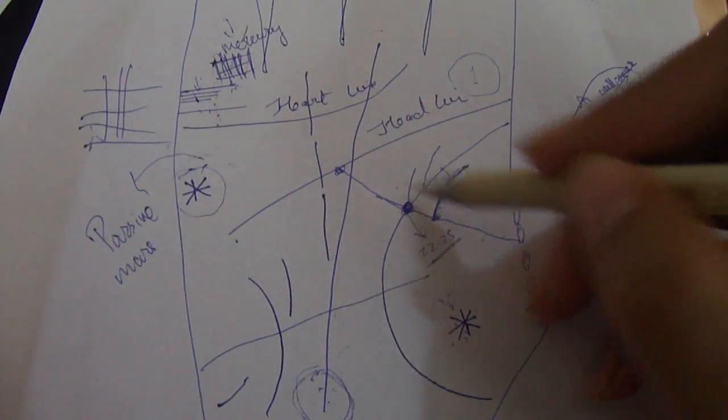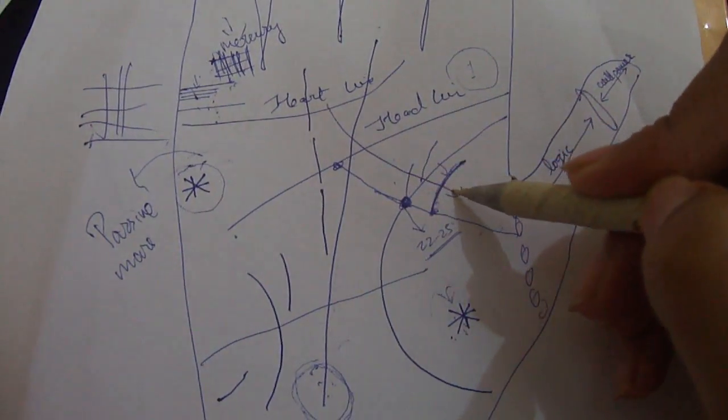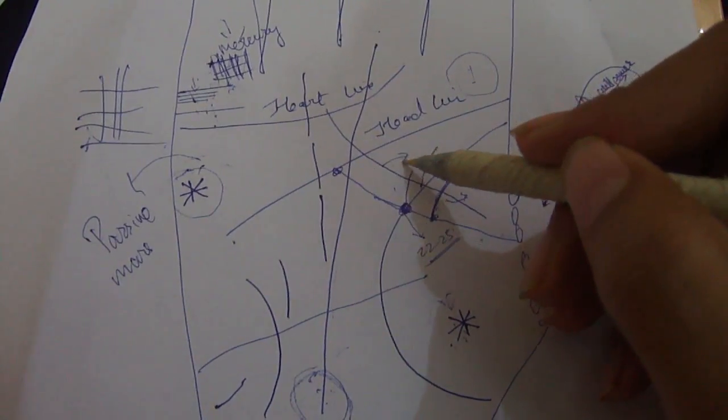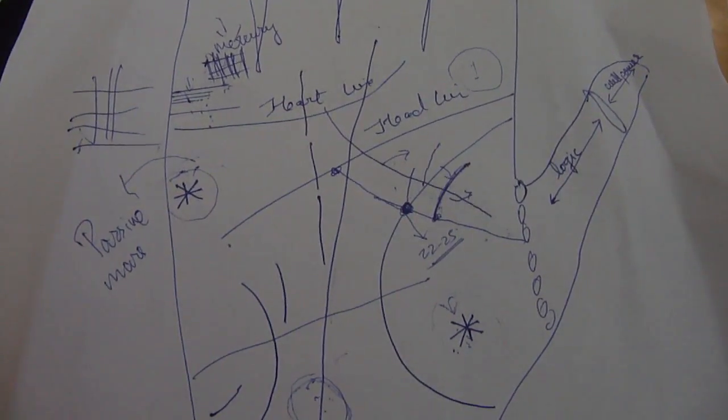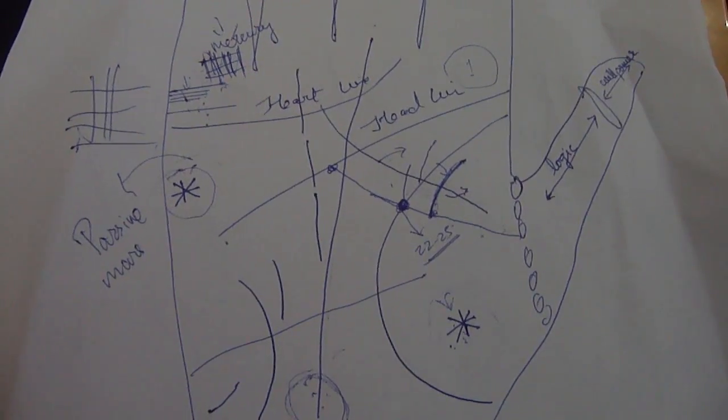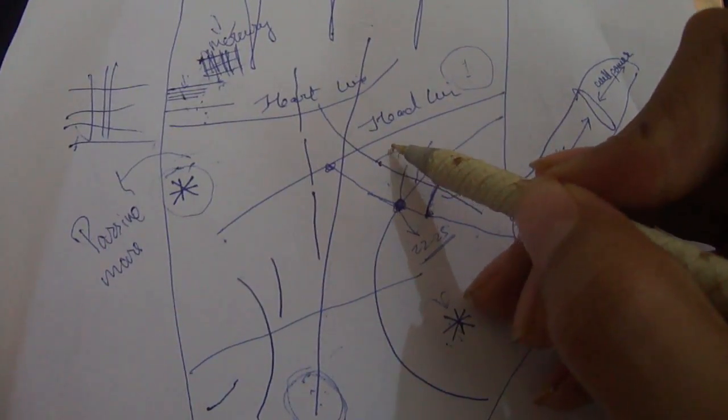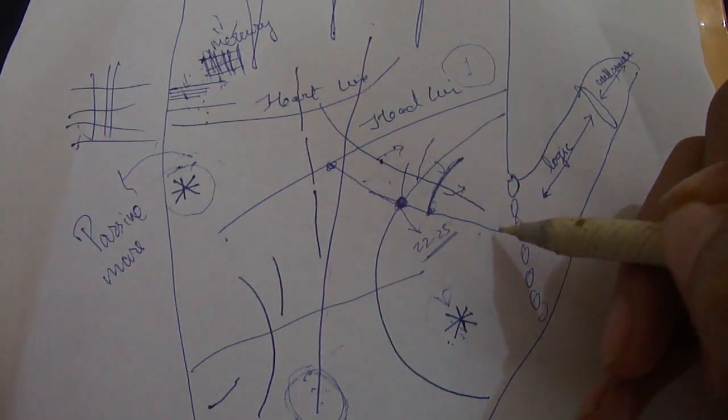They can indicate important relationships, business relationships, or your spouse and marriage. When these lines join another line and that other line improves, these lines are very beneficial.